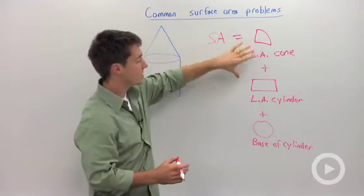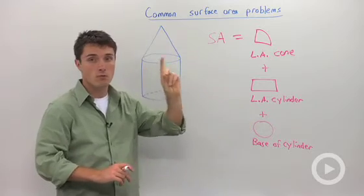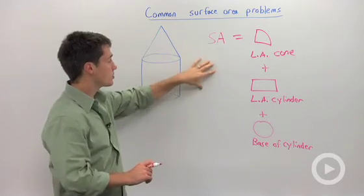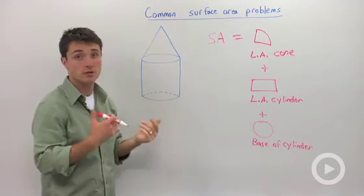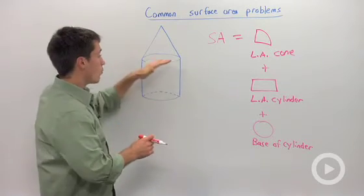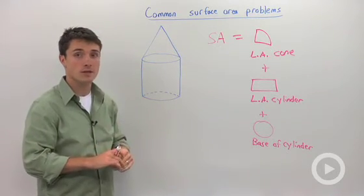But if you look at how we broke it down, we only calculate the surface area of one circle. So that's going to be a trick when you're trying to solve problems where you have joined solids. Identify where they overlap and make sure that you don't double count anything.